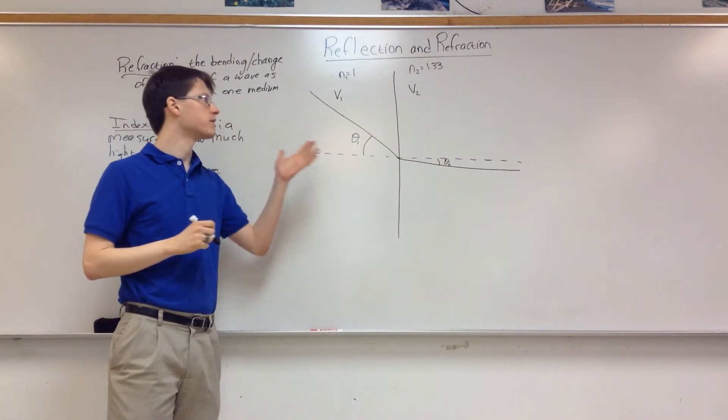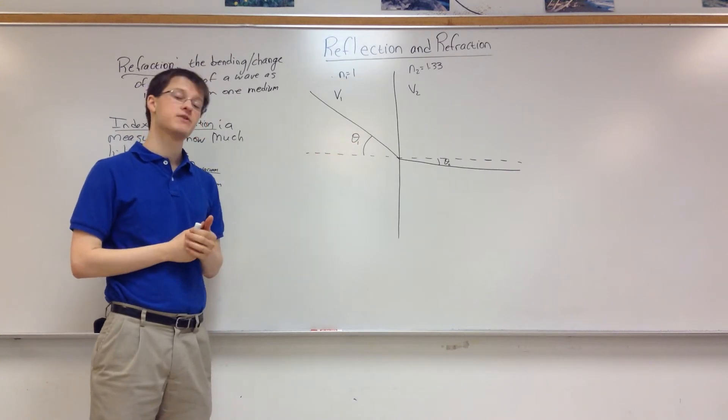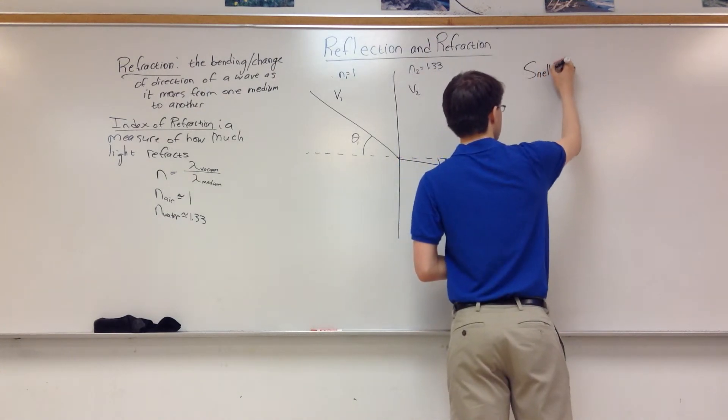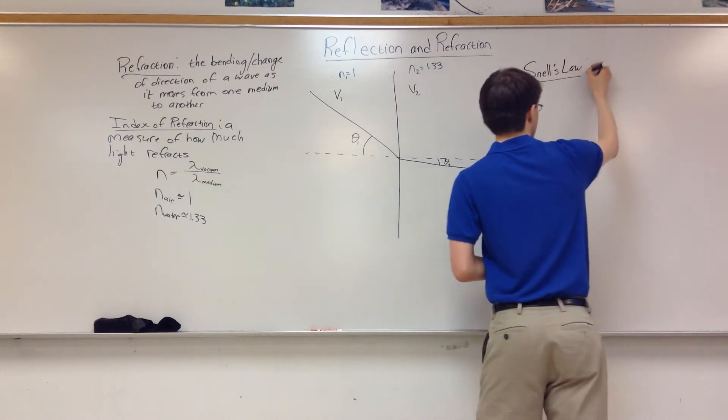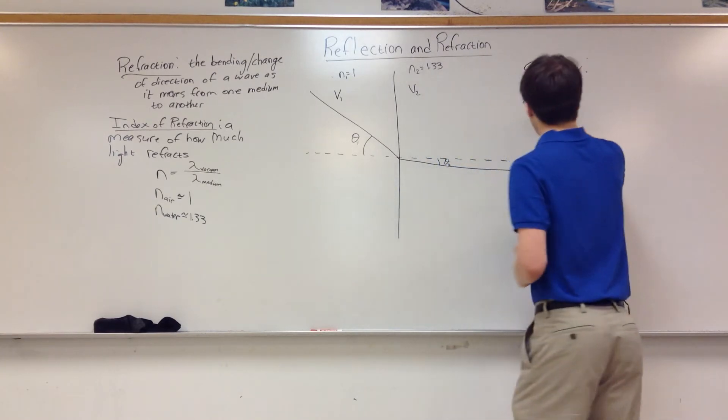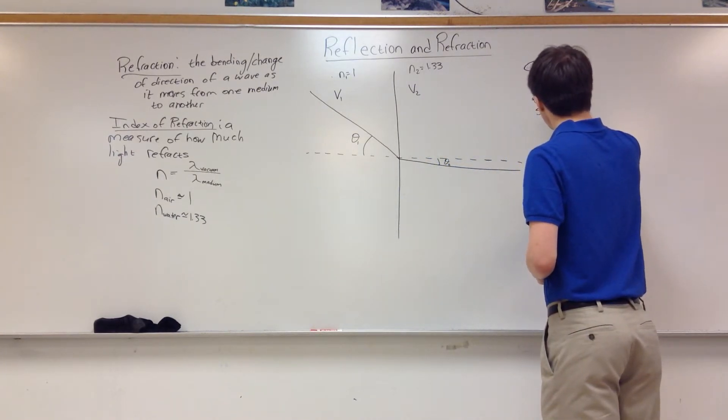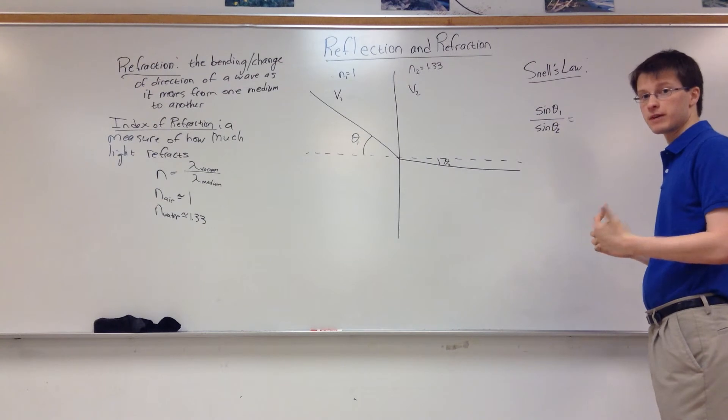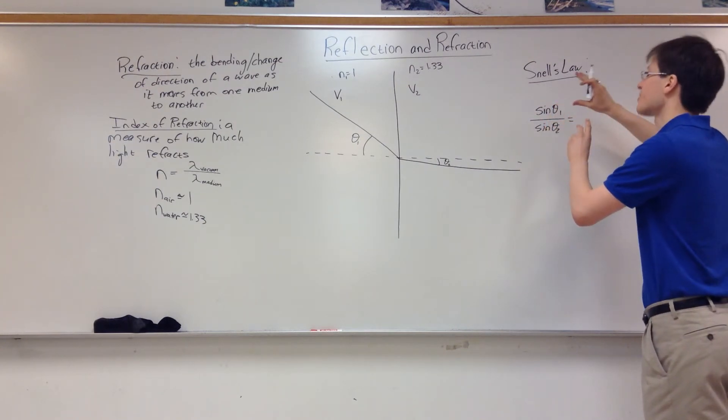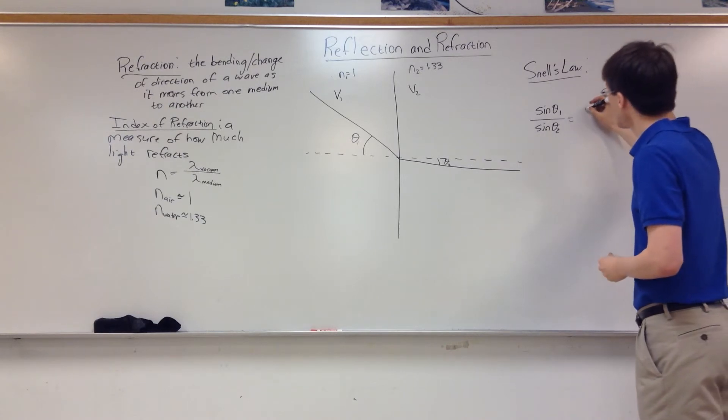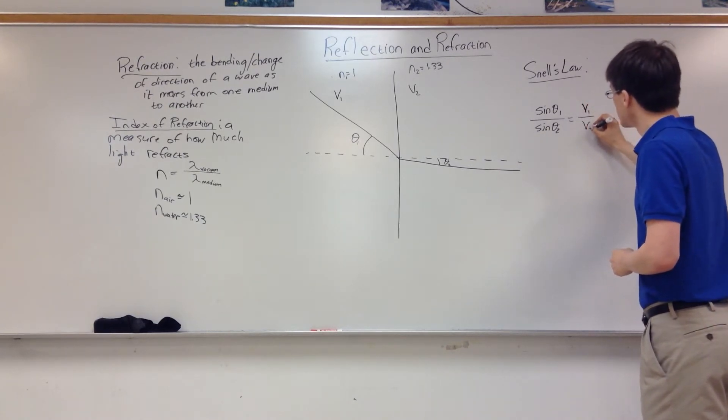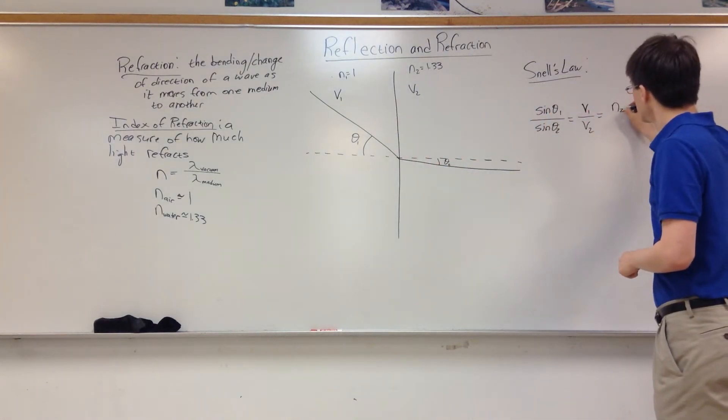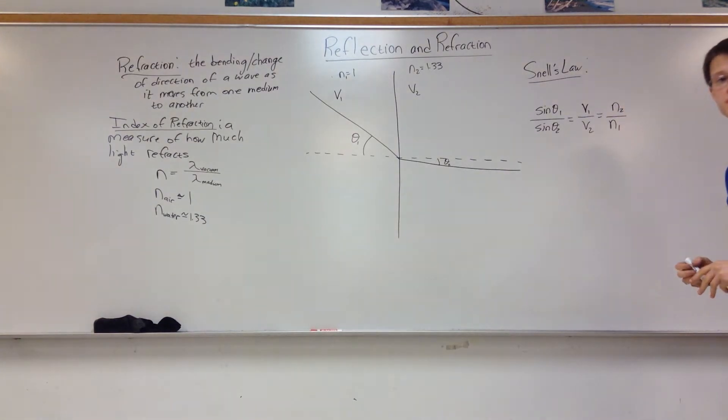Now if we want to figure things out, we want to solve for different values here. There's something called Snell's Law which is going to help us out a lot. Snell's Law says that the ratio of the angle of incidence over the angle of refraction is equal to the ratio of the velocities v1 over v2. And both these ratios are equal to the opposite ratio of the indices of refraction.